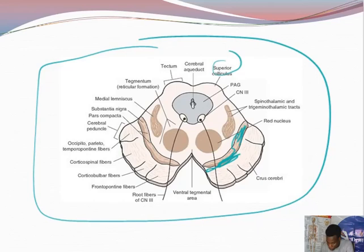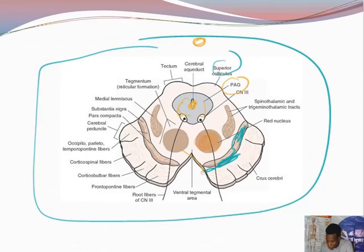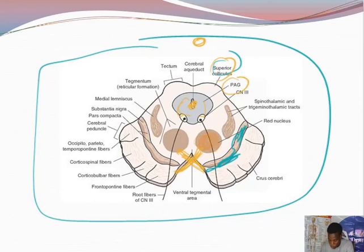The substantia nigra is visible on the cross-section of the midbrain — in the real brain it appears darkened. It is the structure that secretes dopamine and is both functionally and structurally important. Also visible are the cerebral aqueduct conducting cerebrospinal fluid through the midbrain, and the periaqueductal gray matter surrounding it. At the level of the inferior colliculus, the main crossing involves structures associated with the superior cerebellar peduncle.